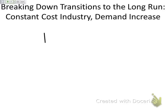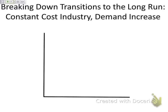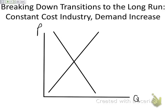I'm going to draw my axes here and label them price and quantity. We are looking at a constant cost industry, and we are going to begin in long run equilibrium. So I'm drawing my supply and demand curves — these are our initial supply and demand curves. I'm going to label them S0 and D0, and they correspond to a quantity of Q0 and a price of P0.